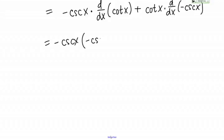This is negative cosecant squared of X plus cotangent X times the derivative of negative cosecant. Well, we know that the derivative of cosecant is negative cosecant cotangent. We're going to have a double negative there, so it's just going to end up being cosecant X cotangent X.